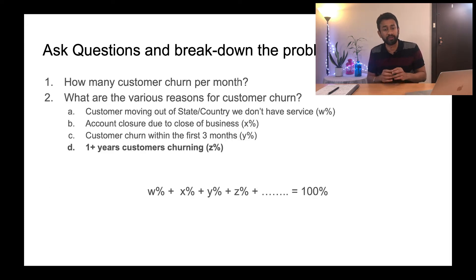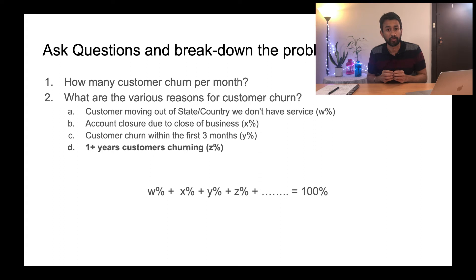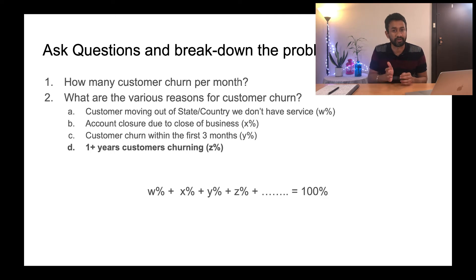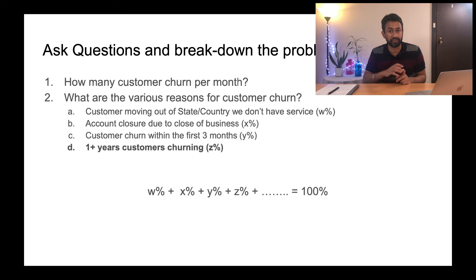Let's pick up the same example — reducing customer churn for a utility company — and solve it using first principle thinking. First, we try to understand how many customers churn in a particular month and what are the various reasons for them to churn. As you see on my screen, there are four reasons. The first is customers moving out of a state or country to an area where we don't have any existing service. These customers cannot be held back, so we remove them from our churn bucket — let's say 10 out of a hundred customers fall into this category.